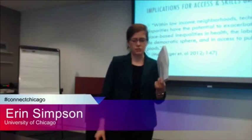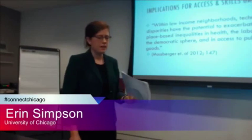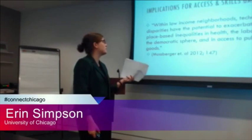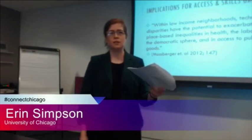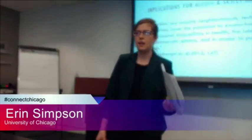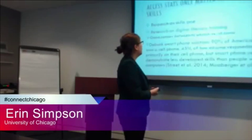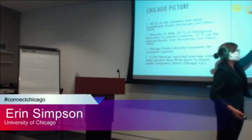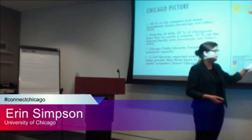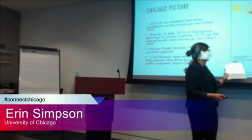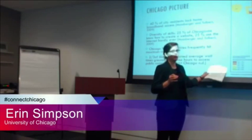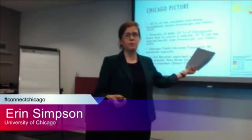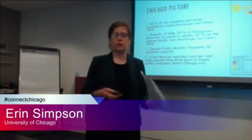Karen Mossberger looked at the geography of this, finding that within low-income neighborhoods, technology disparities have the potential to exacerbate existing place-based inequalities across a variety of markets. The broadband use map by community area in Chicago shows red zones at 35–54% usage and green zones at 86–94% — mapping pretty closely to the socioeconomic disparities we already see.